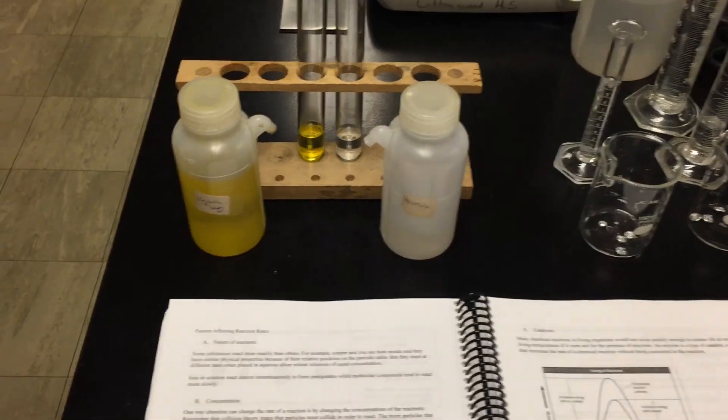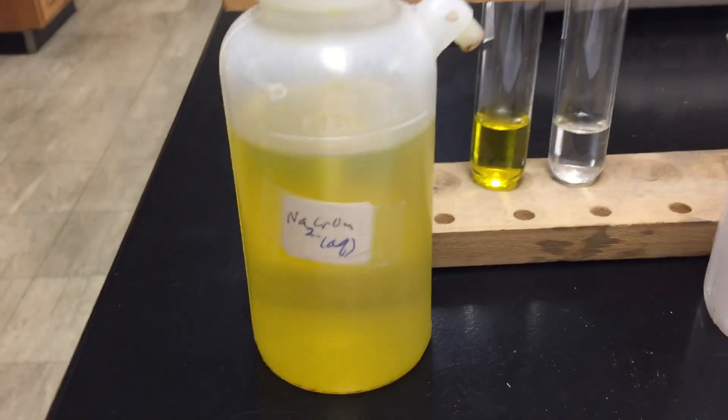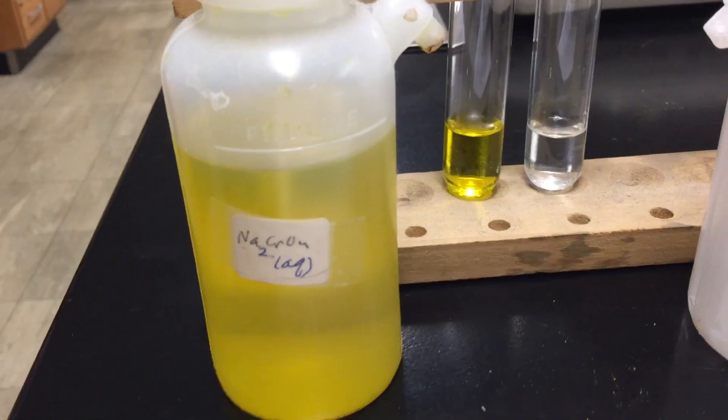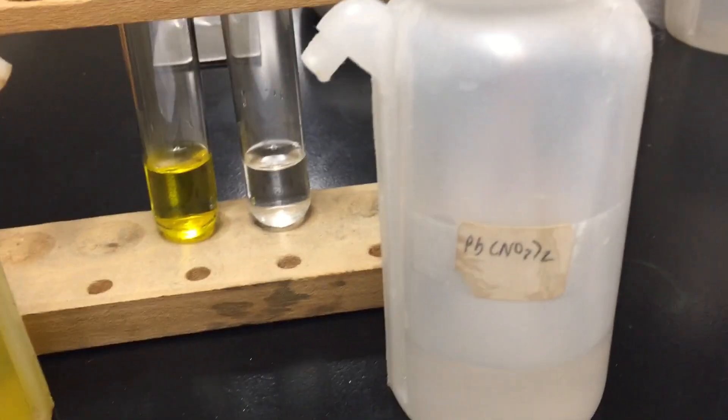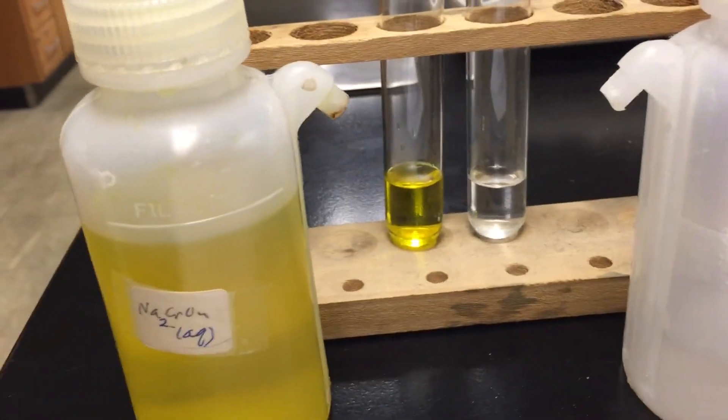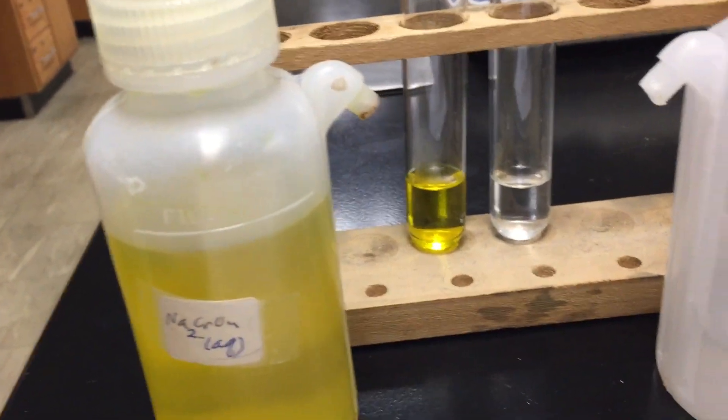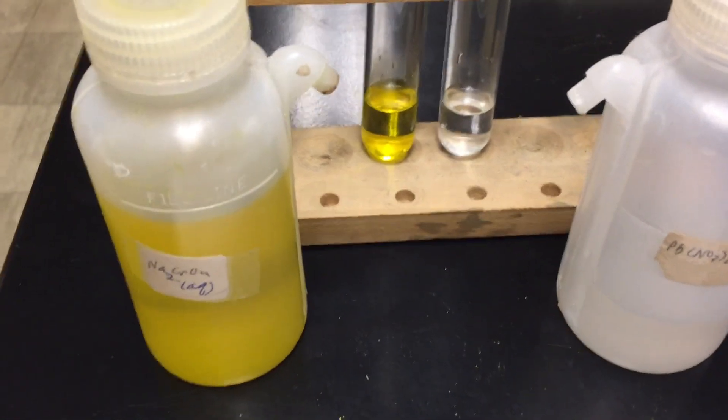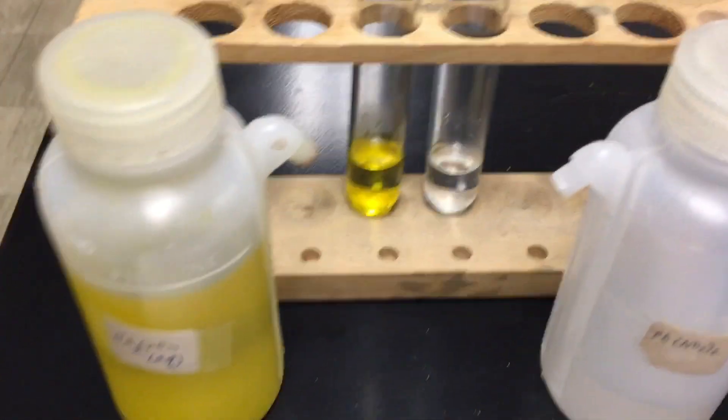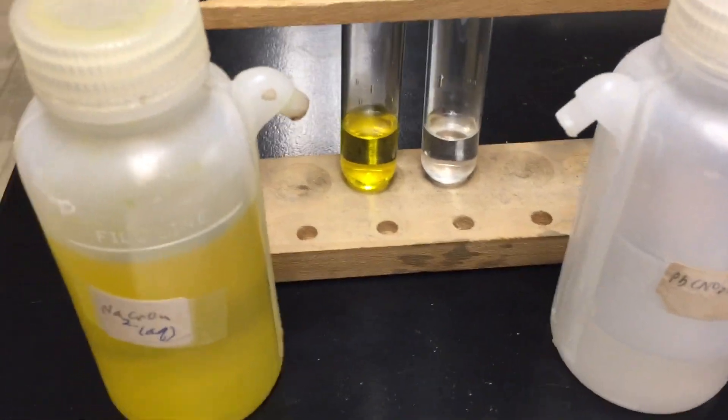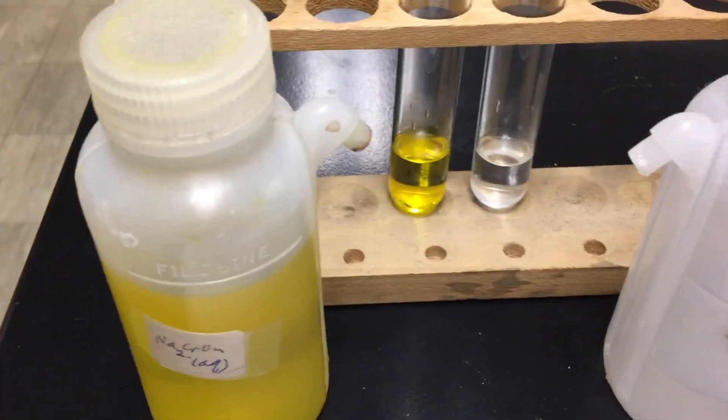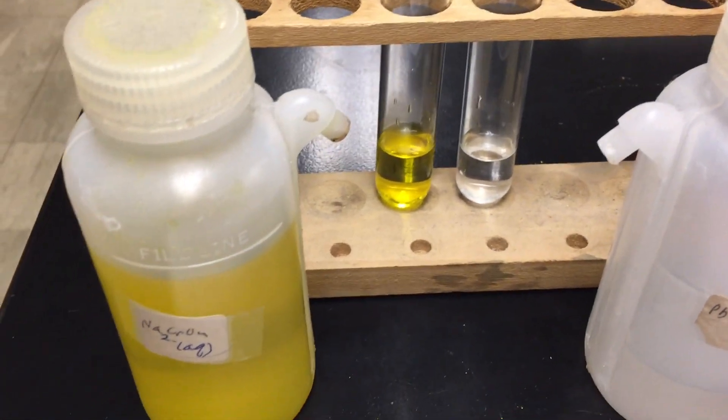The first factor will be the nature of reactants. I have a couple of ionic compounds here, sodium chromate and lead 2 nitrate, and they have been dissolved in water, so we have ions in solution. Now, ions in solution react at a very fast rate. We'll have the positive lead ions being attracted to the negative chromate ions, and that's an instantaneous reaction.